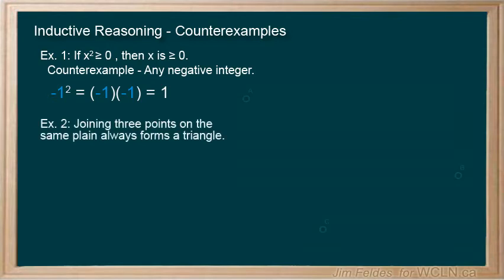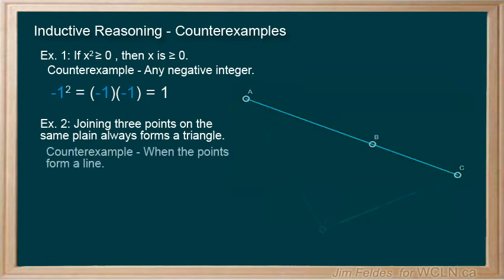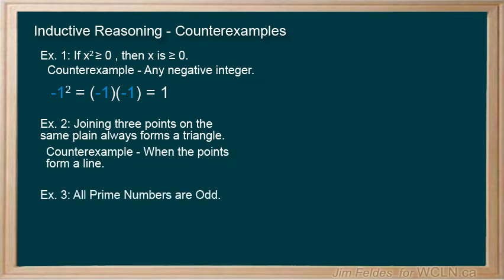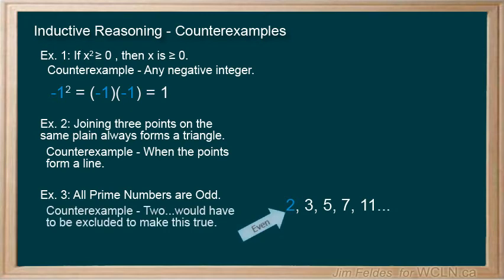Now, example two, any three points on a plane make a triangle. This is usually the case, but may also form a straight line. Example three, all prime numbers are odd. Almost true. Did you identify two as the exception? It only takes one counter-example, so this statement is false. The conjecture could be refined to suggest all prime numbers greater than two are odd.